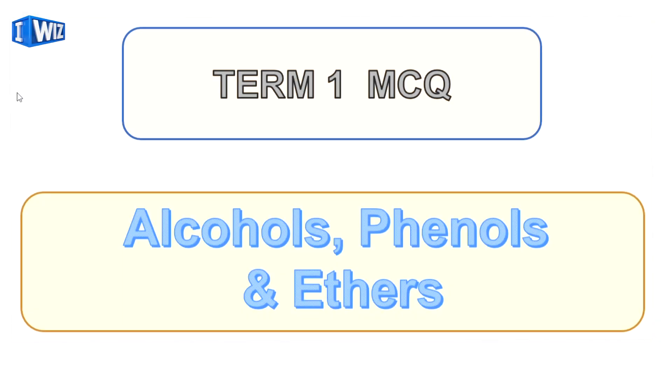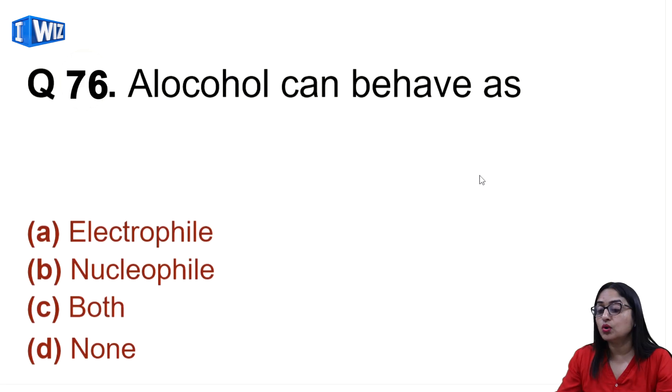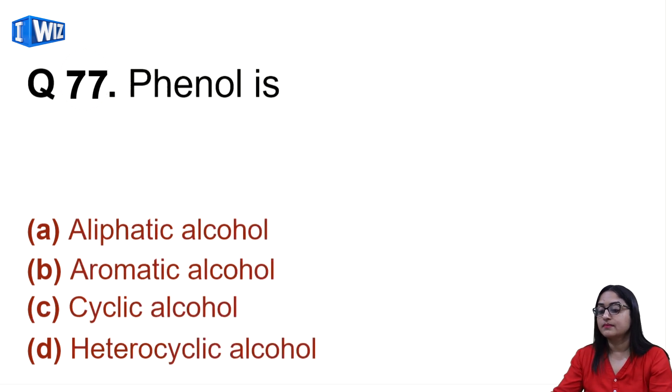Hello students, let's continue from where we left last time. The first question is: alcohol can behave as electrophile, nucleophile, both, or none? Well, alcohol can behave as both. It becomes an electrophile when it's in protonated form, when H positive attaches to it. Protonated alcohol can behave as electrophile, and under normal conditions it behaves as nucleophile.